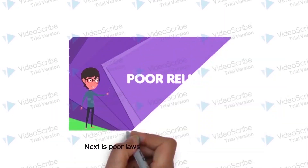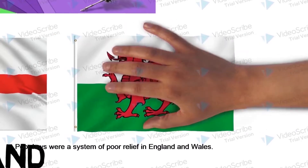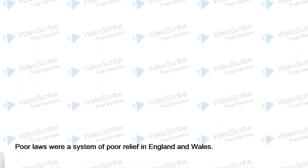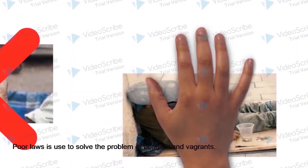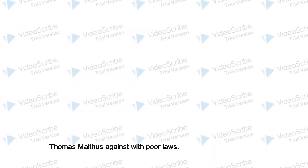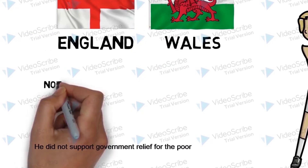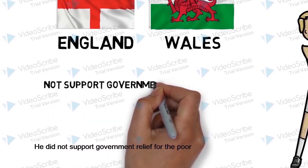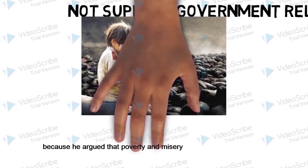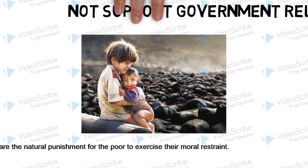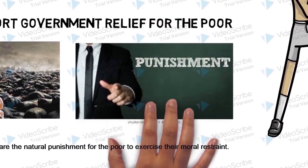Next is Poor Laws. Poor Laws were a system of poor relief in England and Wales, used to solve the problem of beggars and vagrants. Thomas Malthus was against Poor Laws. He did not support government relief for the poor because he argued that poverty and misery are the natural punishment for the poor who fail to exercise their moral restraint.